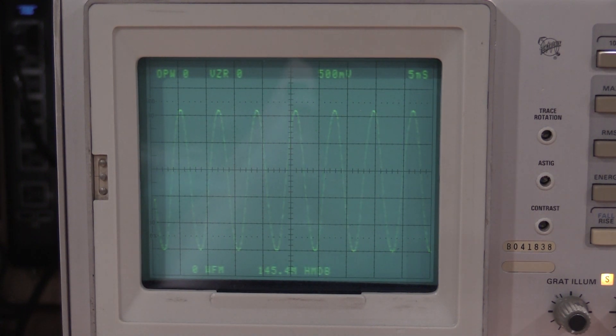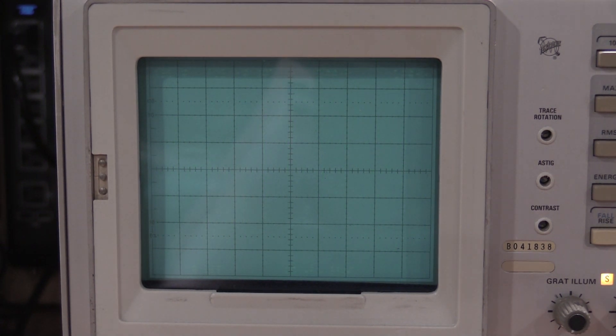Let us check the B time base. See if it gives us any other. Capture. Scope. Trigger. B intensity. A intensity is down. B intensity is up. Position this. Capture.